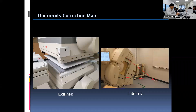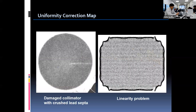However, technetium is more ideal for uniformity calibration due to the fact that technetium is the actual radioisotope we are using for clinical imaging. The frequency of testing depends on manufacturer's recommendation and camera condition. We usually acquire the correction map monthly, as long as the condition of the camera is not poor. Extrinsic uniformity correction may solve the problem posed by a defective collimator, as shown in the left image. Intrinsic correction can take care of a linearity problem, as described in the image on the right.